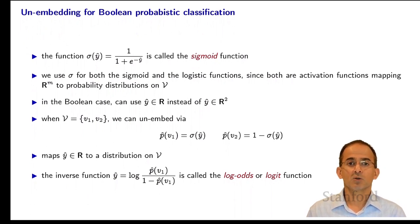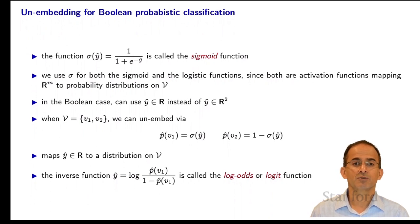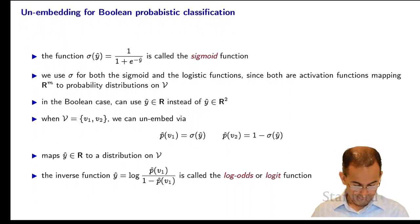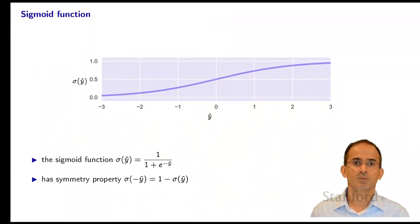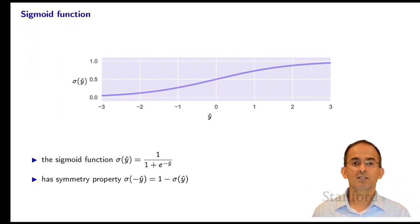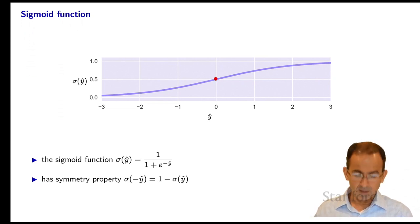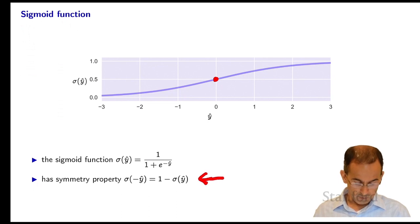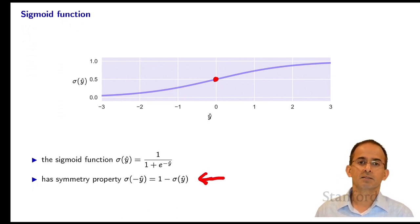We take sigma of y-hat to get a number between 0 and 1, which we use as our prediction probability for target value V1. For target value V2, we take 1 minus sigma of y-hat. So we've mapped a real number to a distribution on V. The inverse map, which allows you to go from probabilities back to y-hat, is called the log-odds or logit function. The sigmoid goes from 0 at minus infinity to 1 at plus infinity, and equals 1/2 when y-hat is 0. The symmetry is expressed as: sigma(-y-hat) = 1 - sigma(y-hat).